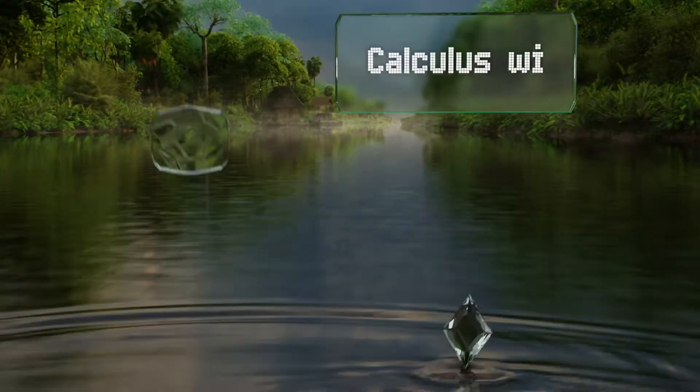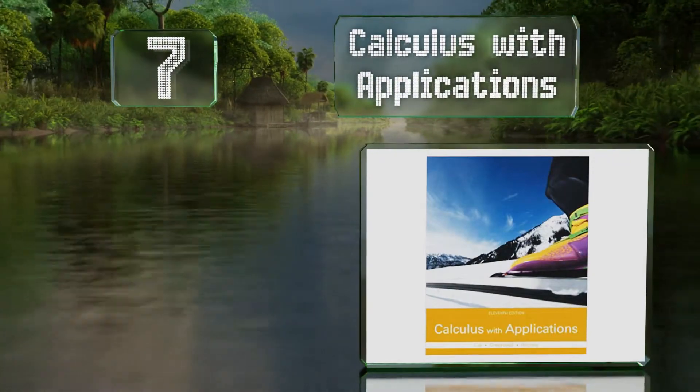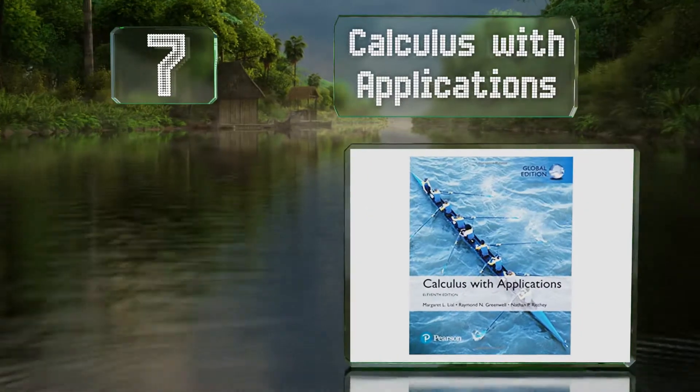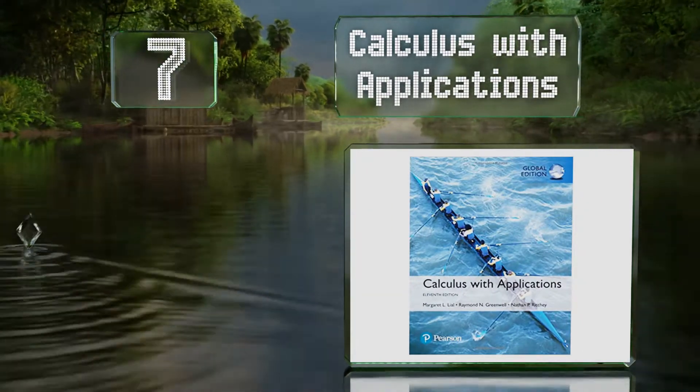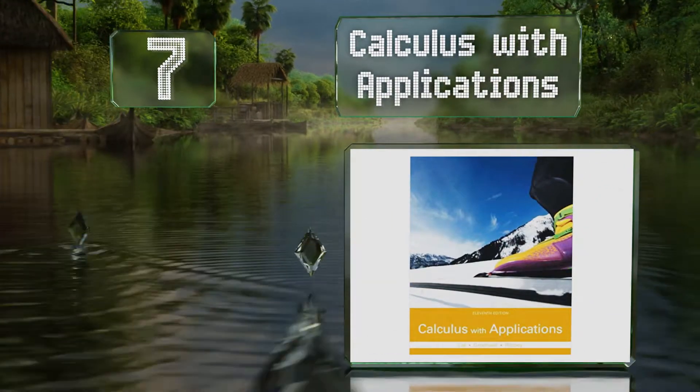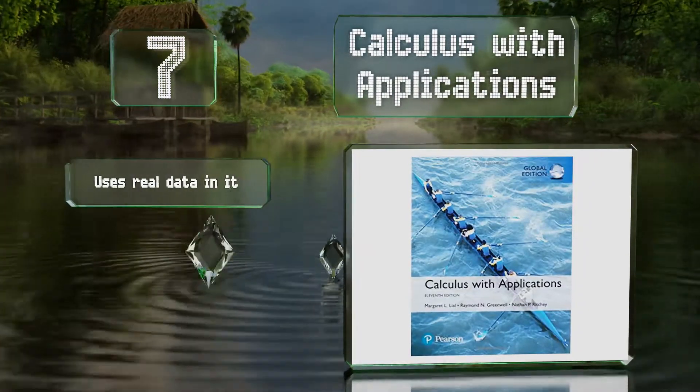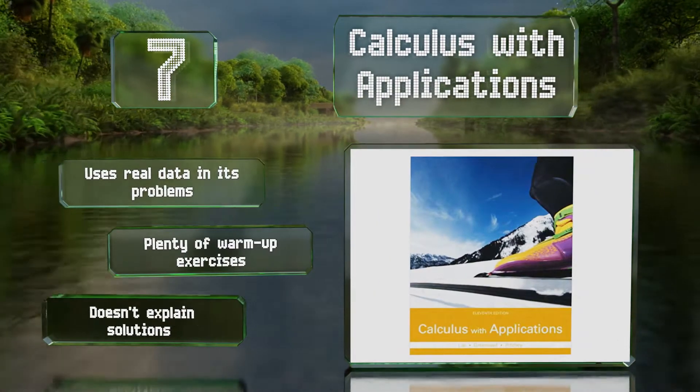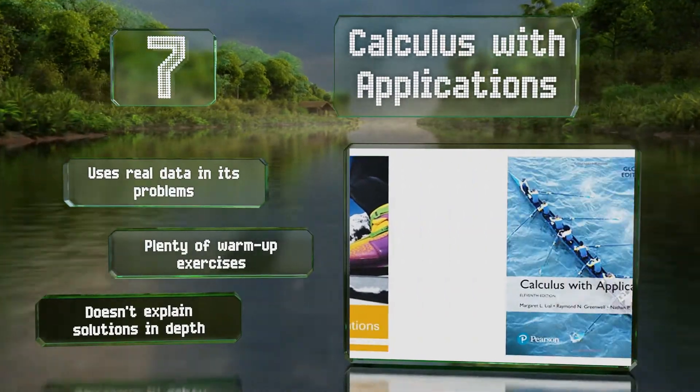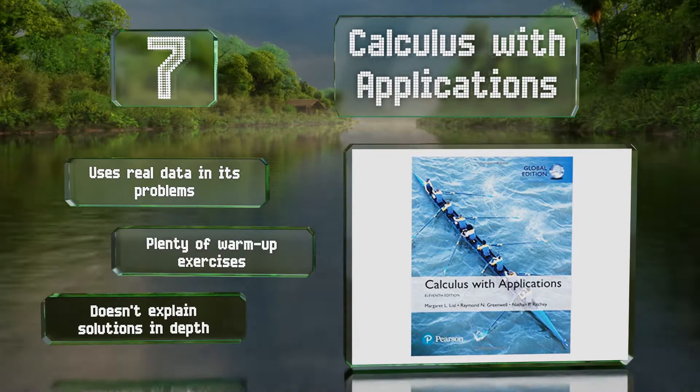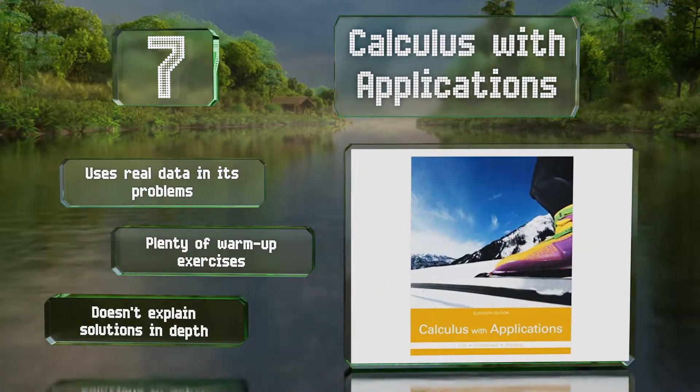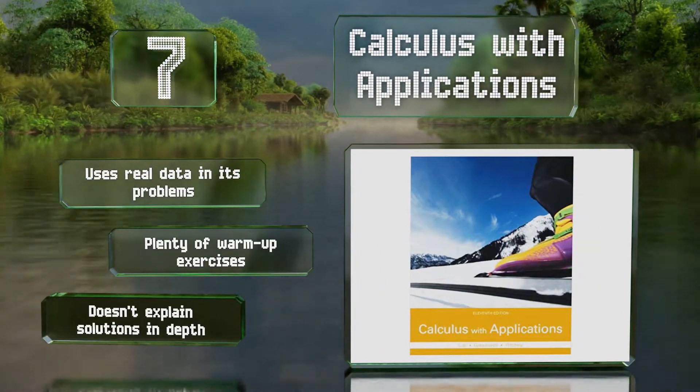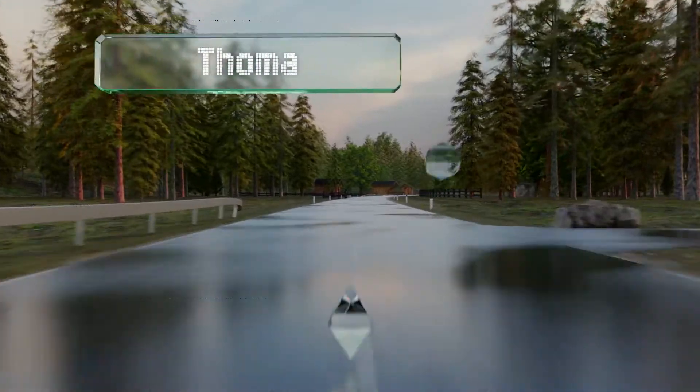At number 7, Calculus with Applications is written with non-math types in mind as it takes examples and applies them to other fields such as medicine and social science. It'll also bring you up to speed on the algebra you need, so don't worry if you're a little rusty going in. It uses real data in its problems and offers plenty of warm-up exercises, but it doesn't explain the solutions in depth.